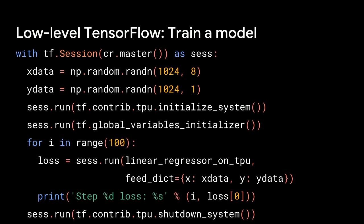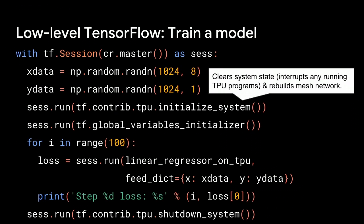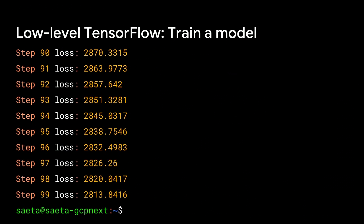Now that we have the session, it's straightforward to run our program on the Cloud TPU. We initialize the TPU system — this is relatively heavyweight: it clears the entire TPU system state, interrupts any running TPU programs, rebuilds the mesh network, and gets everything clean and ready. After that, we run 100 steps of our training loop, print out the losses, and shut down the system. If you paste this into foo.py and run it, after 10 to 15 seconds of initialization, 100 lines of loss will be printed.